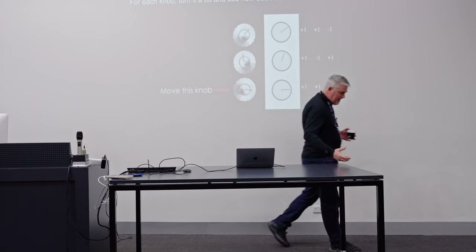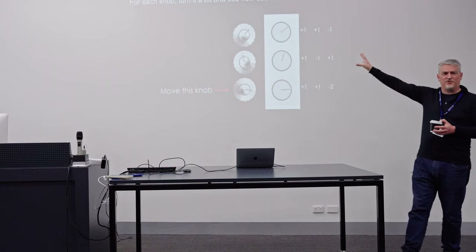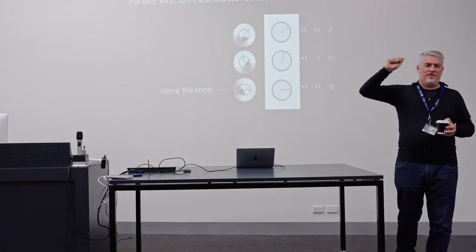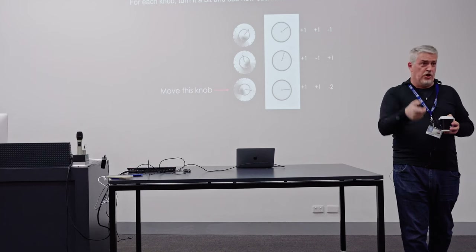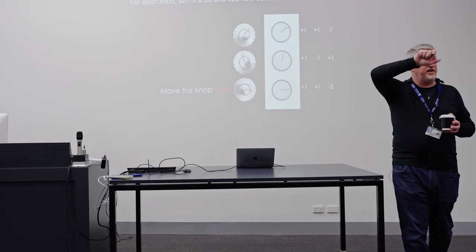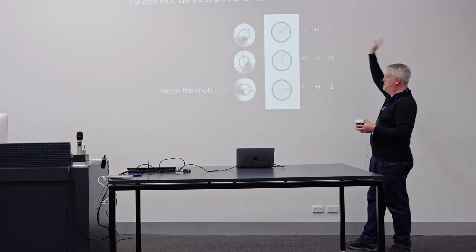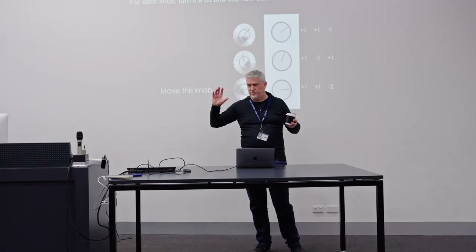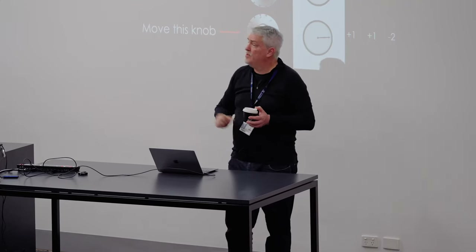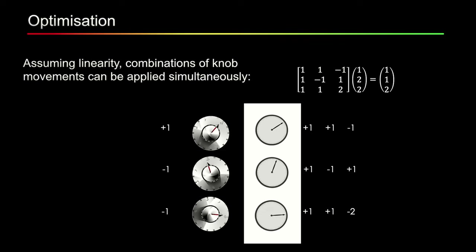In the language of optimization, this set of numbers is called a Jacobian — a matrix of partial derivatives. What that means is: how much does each output vary with respect to each knob? So if I move the first knob, how much are the outputs moving; the second knob, and so on. This dial has partial derivatives of one, one, and minus one with respect to the three knobs. The reason we care about this is we make an assumption that if I do some small combination of the knob adjustments, I get that combination of effects. Mathematically that looks like a matrix equation.